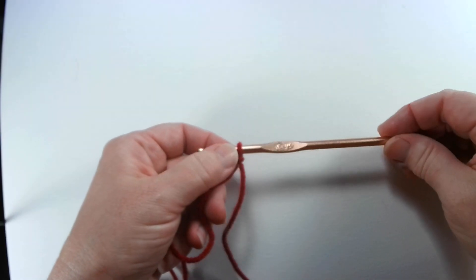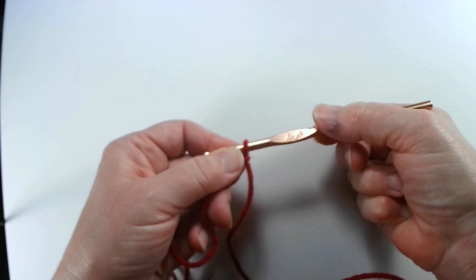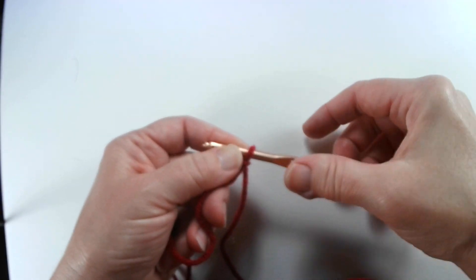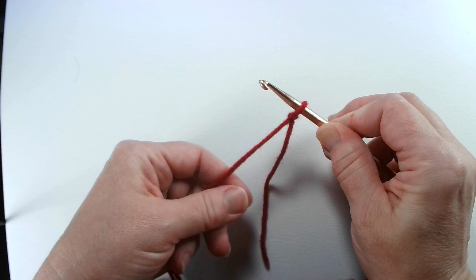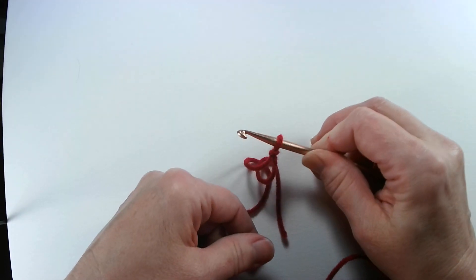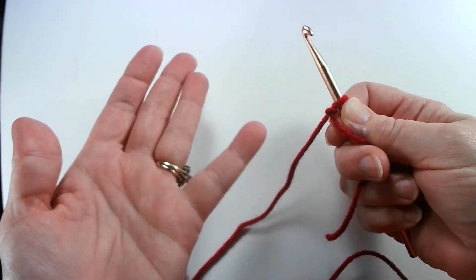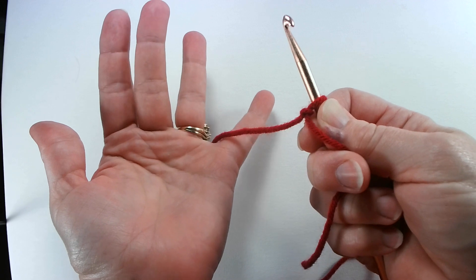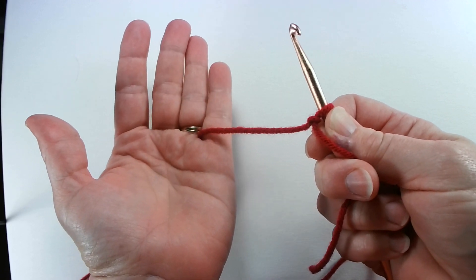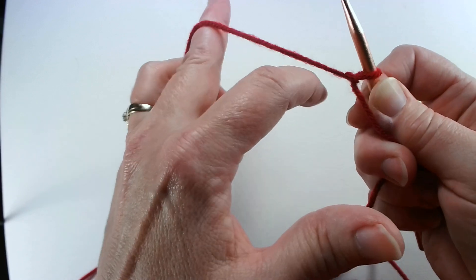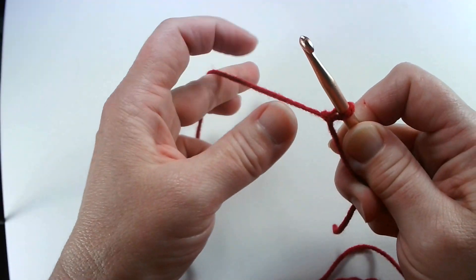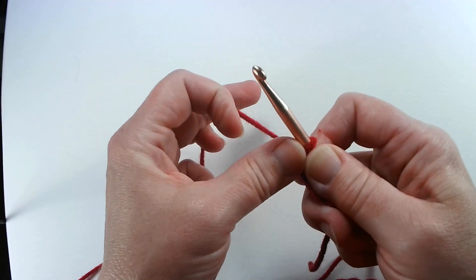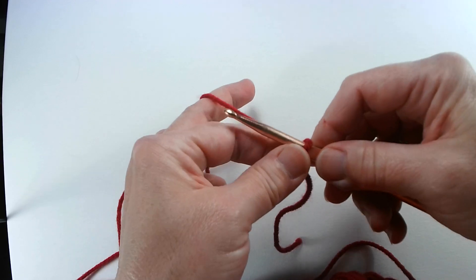With crocheting you use a hook. The hooks usually have a little flat part where you can hold them. Since I'm right-handed, I usually hold my crochet hook between my thumb and my index finger in my right hand with the hook facing me. My left hand I start with my palm up. I put the yarn between my little finger and my ring finger and I twist it around. I twist it around my hand and then I hold it like this.